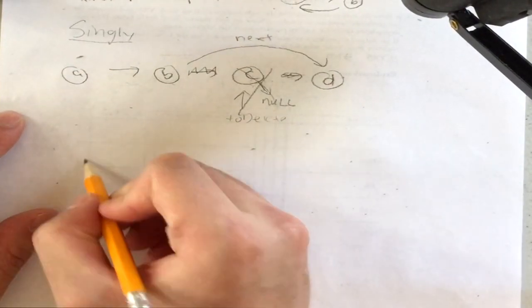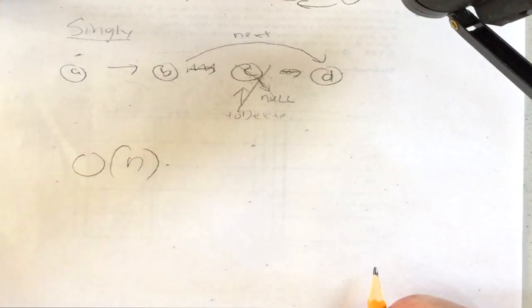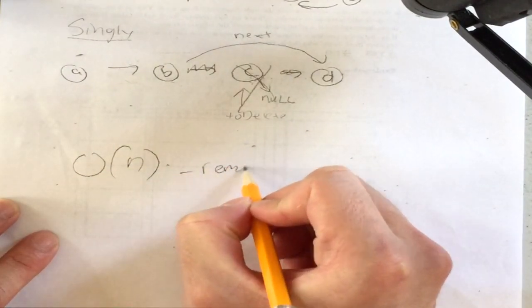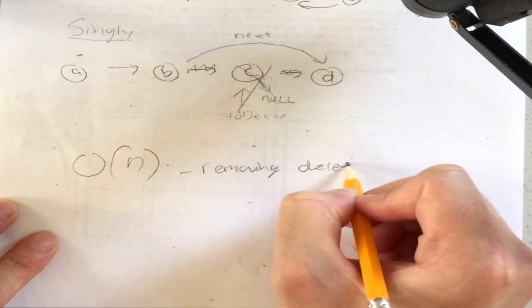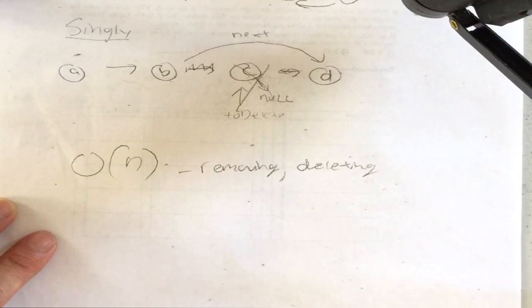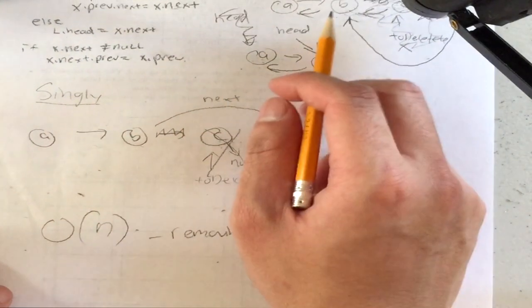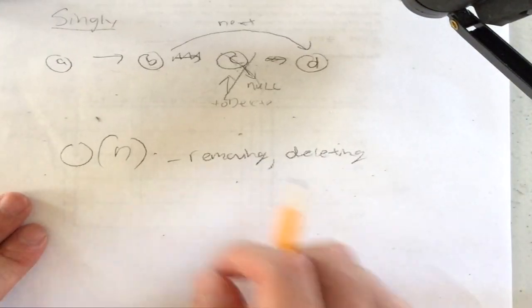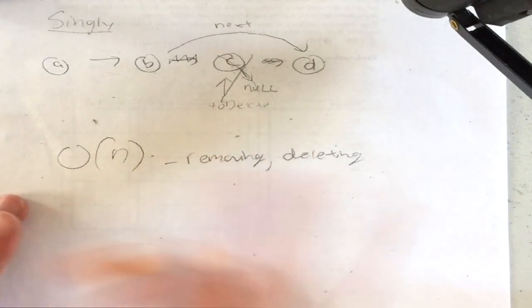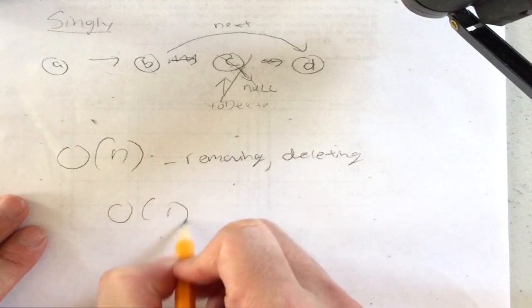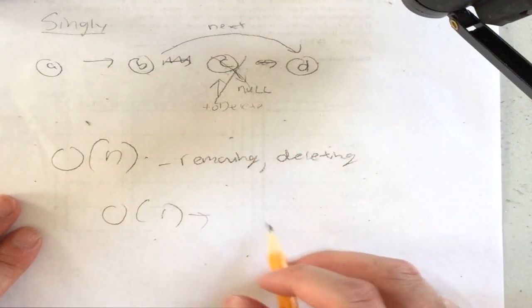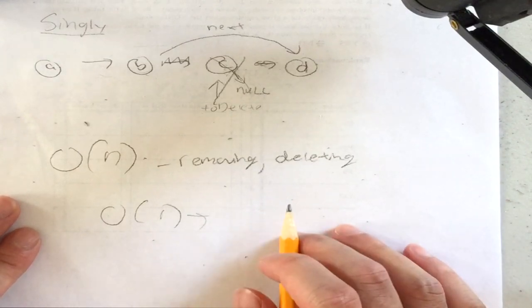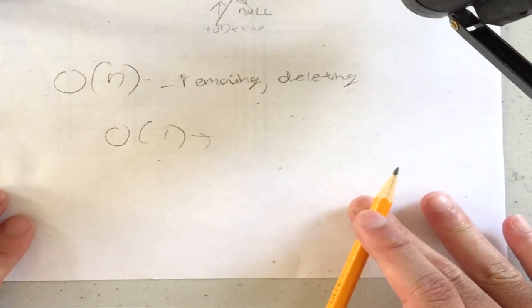The main caveat of linked lists is that searching and deleting require traversal, which is O(n). Just changing the pointers themselves is O(1), but finding the element and its neighbors takes O(n). That's basically all there is to linked lists — rate, comment, subscribe, and I'll catch you guys later.